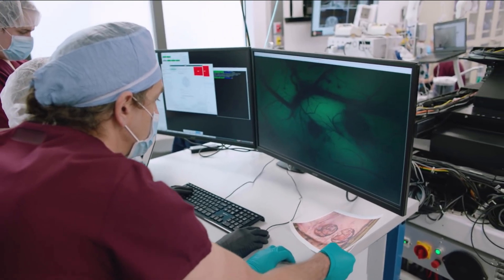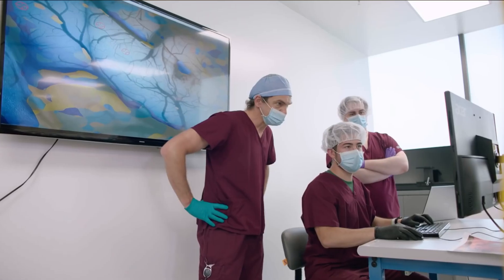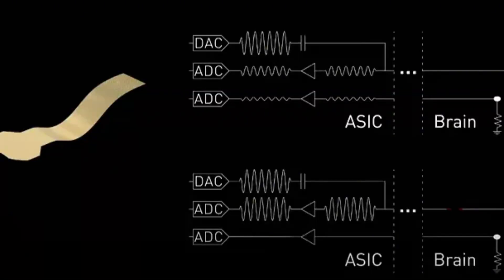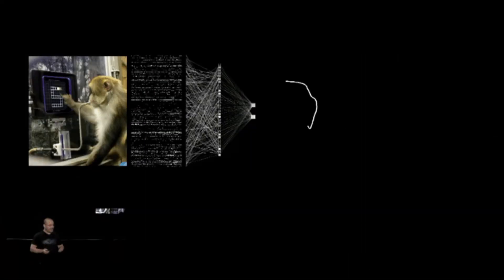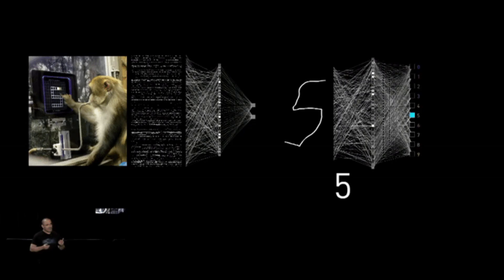This device, designed to be implanted into the human brain, was the first step towards making Musk's vision a reality. The N1 chip records and processes the brain's electrical activity, transmitting this data to an external device. The external device then decodes the patient's brain activity, learning to associate certain patterns with the patient's intended action.